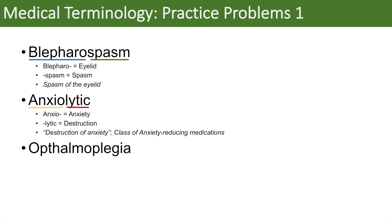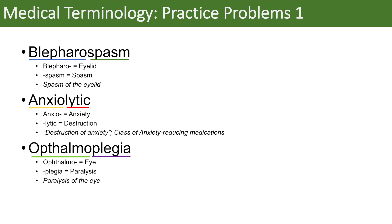The next word we're going to look at is ophthalmoplegia. When we break this word down, ophthalmo means eye. And plegia — you can think of paraplegia — plegia means paralysis. So ophthalmoplegia, when you put it together, means paralysis of the eye.